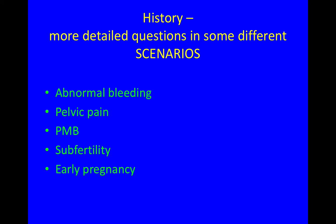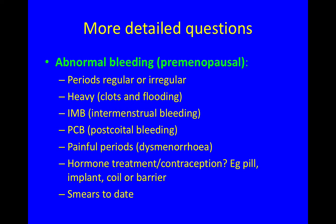There are different scenarios that would make you ask some more detailed questions. We'll go through these five scenarios one at a time. The first is abnormal bleeding in a premenopausal woman. I'd like to know: are her periods regular or irregular? Are they heavy — by which I mean, are there clots and flooding?